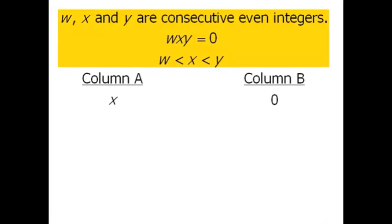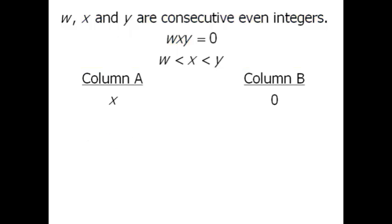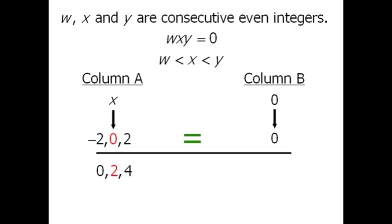Given the following conditions, w, x, and y could equal negative 2, 0, and 2, where x equals 0. In this case, column A is equal to column B.